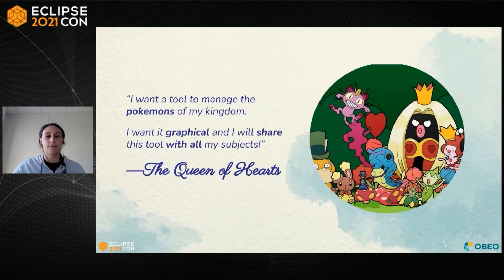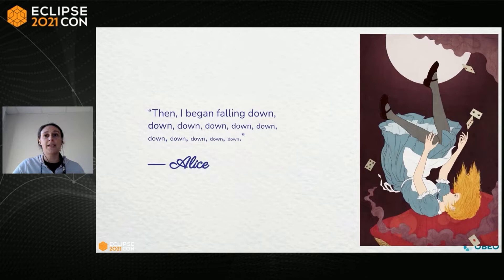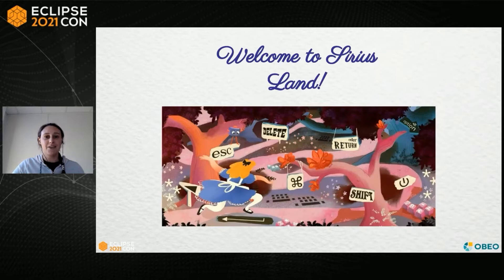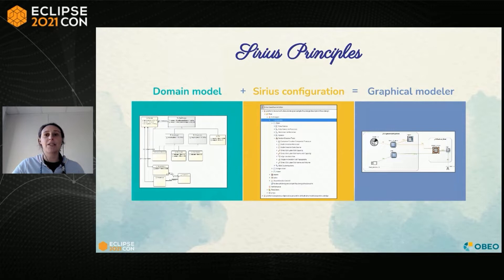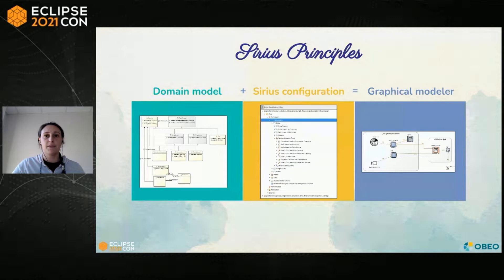Alice went on the internet to search for a solution to create easily the graphical studios expected by the Queen. She searched on many different websites, discovering frameworks, tutorials, reading documentations. And one day, she arrived in Sirius land. It was at that time that Alice discovered that the Eclipse IDE was not only a classical IDE, but provides many ways to manage and visualize data. Alice learned the Sirius principles. To create her own graphical tool, she needed to define her domain to specify the data she wanted to manage and their relationships. Then Alice had to define the mapping between her domain concepts and how she wanted to represent them graphically by creating a Sirius configuration.